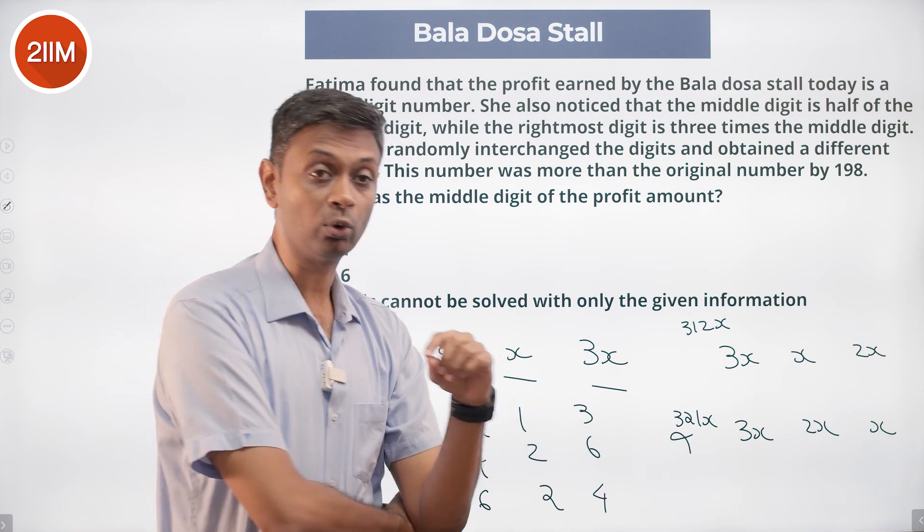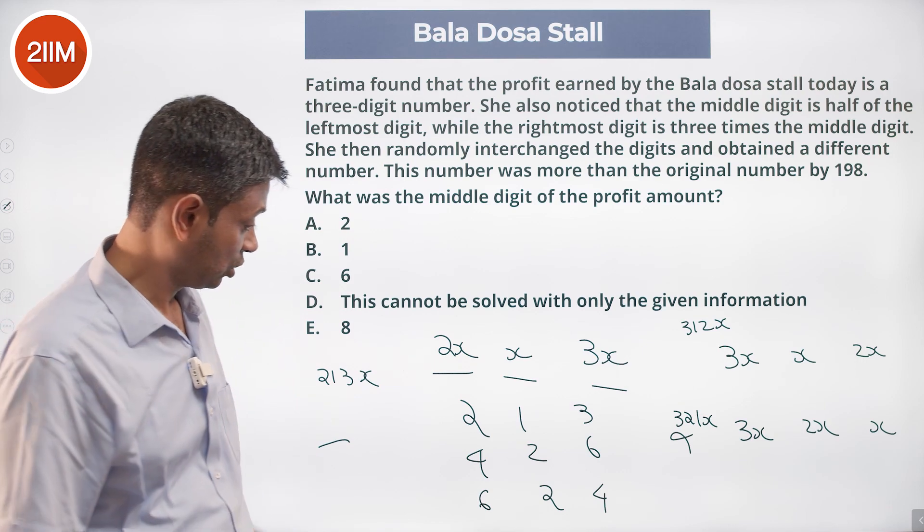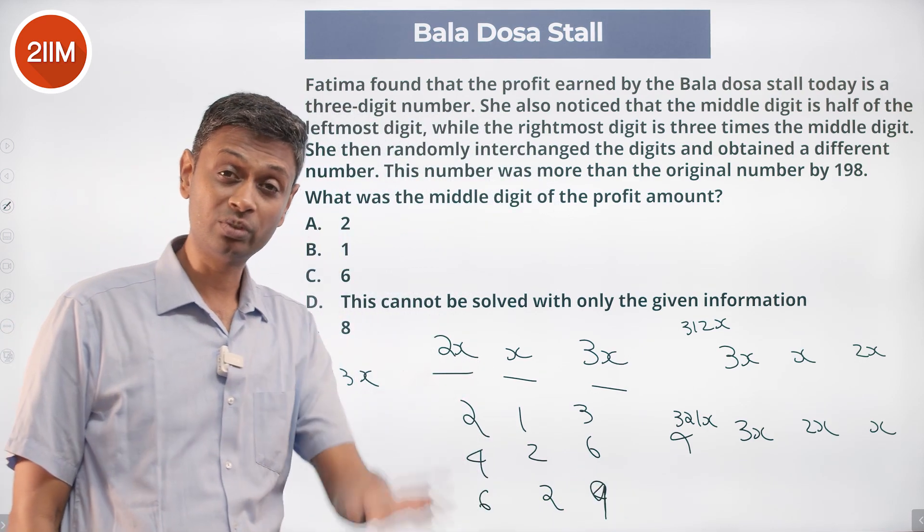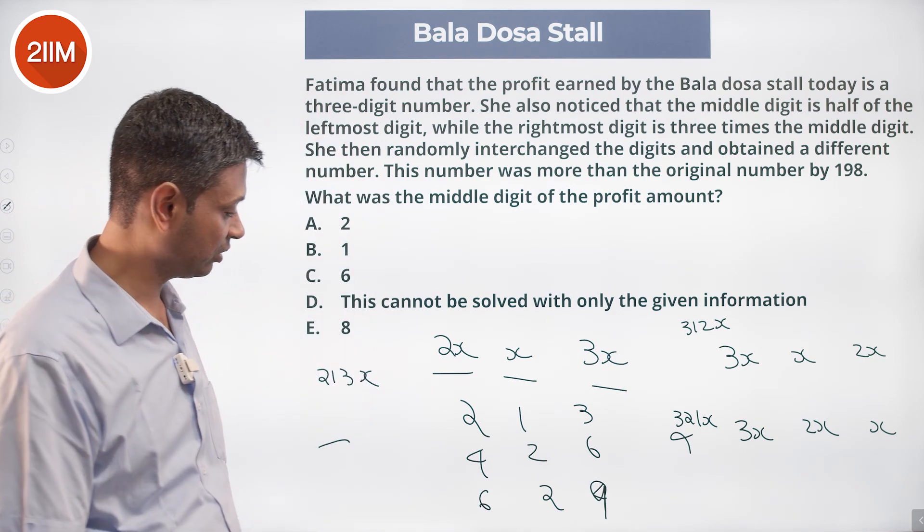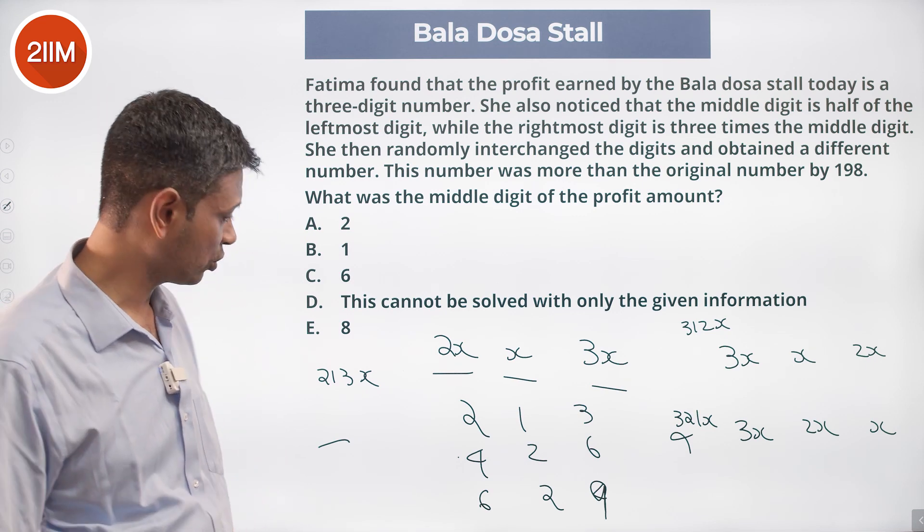426 going to 624. 426 becoming 624 will increase it by 198. 629 going to 962, there the increase will be even higher than this. We are talking about 629 going to 926 won't tick the box.